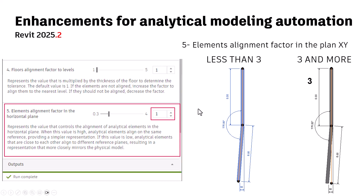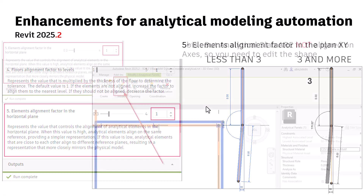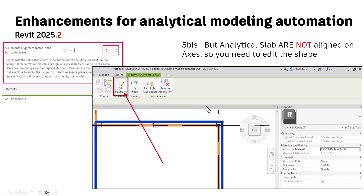You may need to select elements one by one to see if they fit. You can select one part, create it, then select the second part and they will be connected. Note that slabs are not auto-aligned.